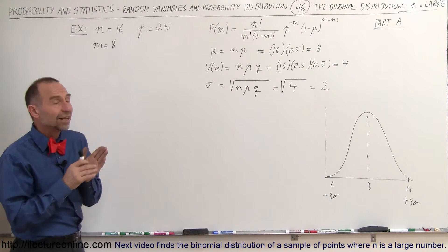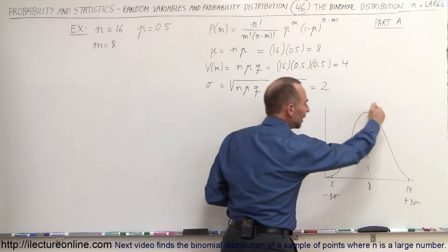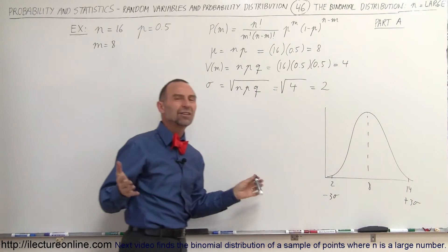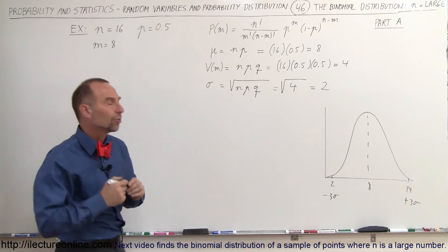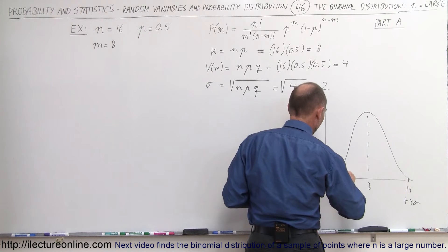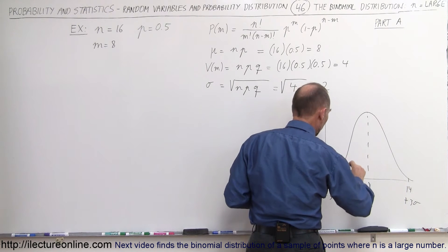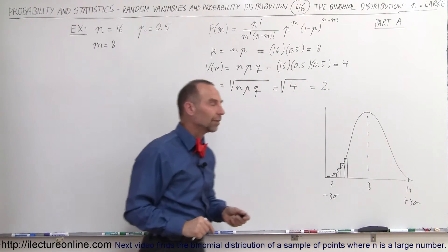Notice that in this binomial distribution, we actually have discrete values, and the curve that I drew is not one with discrete values, but at least it shows you the proximal shape of those discrete values. When you have a whole bunch of rectangles that are closely spaced together, you can see that it begins to look more and more like a Gaussian or a normal distribution curve.